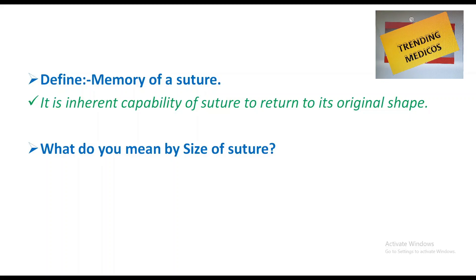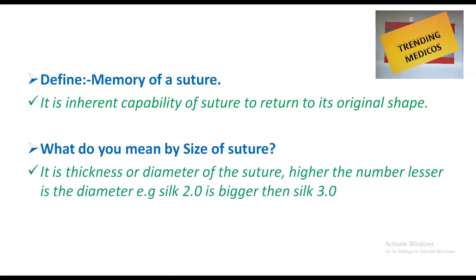Memory of a suture is the inherent capability of the suture to return to its original shape. When the memory is high, the suture tends to come back to its original shape and is difficult to handle. Therefore, an ideal suture should have less memory.